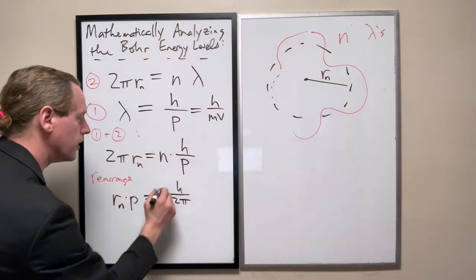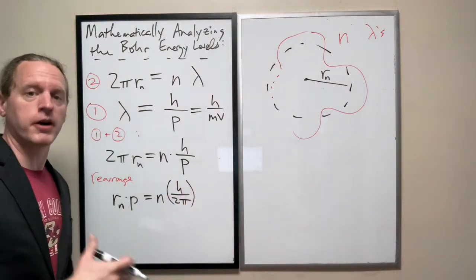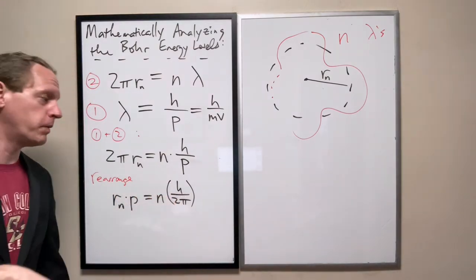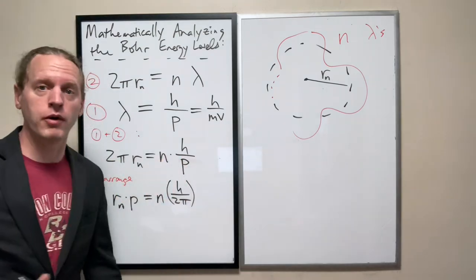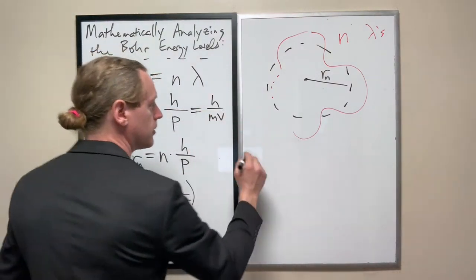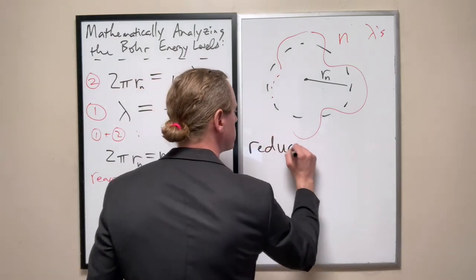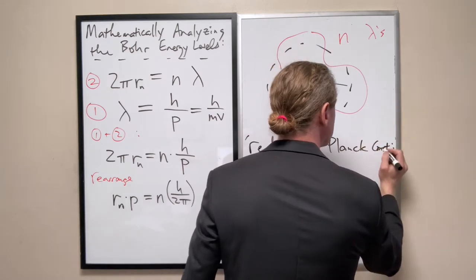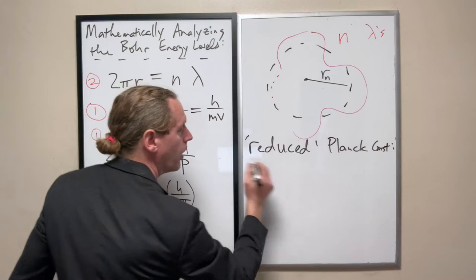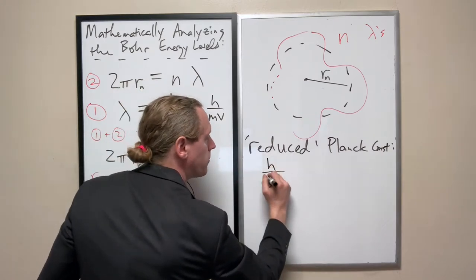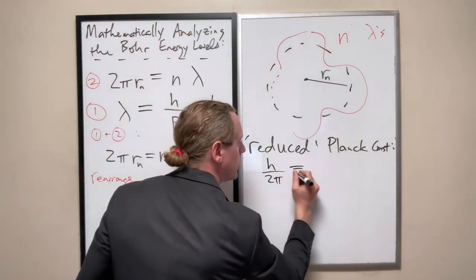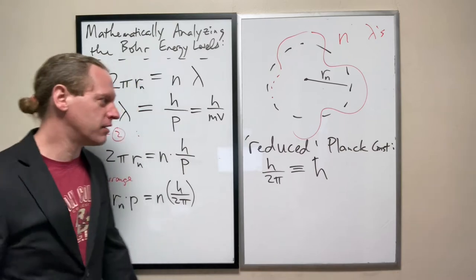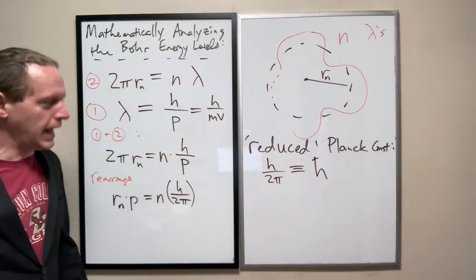Now, before we go further, this thing is just going to pop up over and over and over the entire rest of the semester. So, Planck's constant divided by 2π, we actually give a whole other symbol for, and we call it the reduced Planck's constant. The reduced Planck's constant is h over 2π, which we define or we write as simply just h bar. It's h with a little bar through the top of it. And you pronounce it h bar.